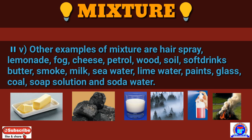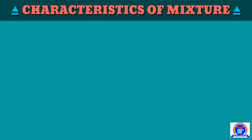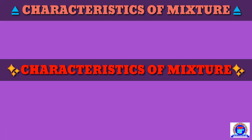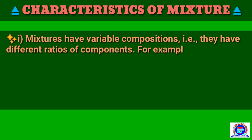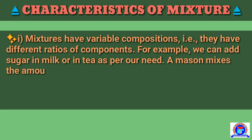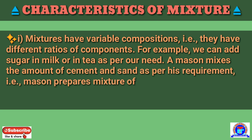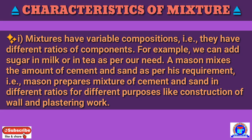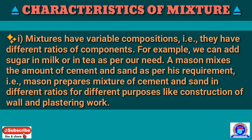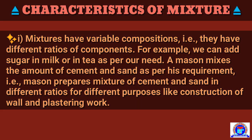I hope you understand the definition of mixture and their examples. Now I am going to discuss the characteristics of the mixture. Number 1: mixtures have variable components — that is, they have different ratios of components. For example, we can add sugar in milk or in tea as per our need. A mason mixes the amount of cement and sand as per his requirement, preparing the mixture in different ratios for different purposes like construction of walls and plastering work.